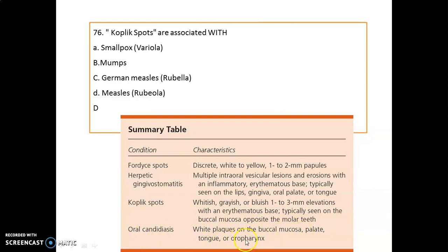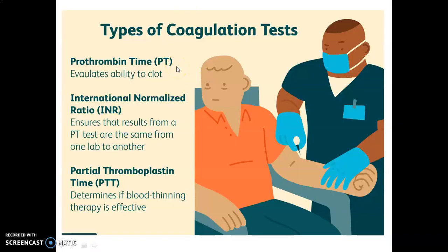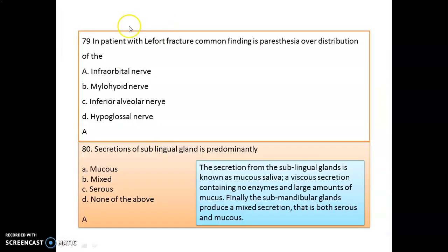At the age of six years, a child has reached approximately 90% of its adult brain size. Normal prothrombin time is 11 ± 2 seconds, i.e., 11 to 13 seconds. Other important values: activated partial thromboplastin time (aPTT) is 25 to 36 seconds; fibrinogen 130 to 330 mg/dL; hemoglobin 12 to 15 g/dL; hematocrit 36 to 44%; WBC 4,000 to 10,000 per liter; platelets 1.5 to 4.0 lakh per liter. PT is used to evaluate the ability to clot; INR should be between 2.5 to 3.5 and determines whether blood-thinning therapy is effective.